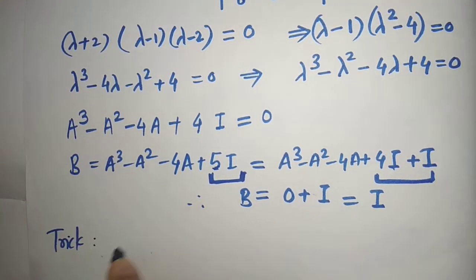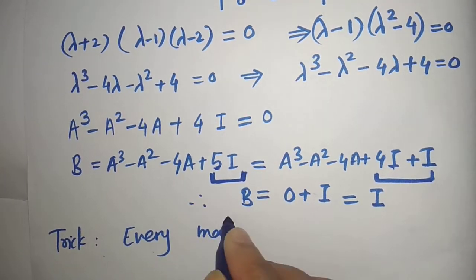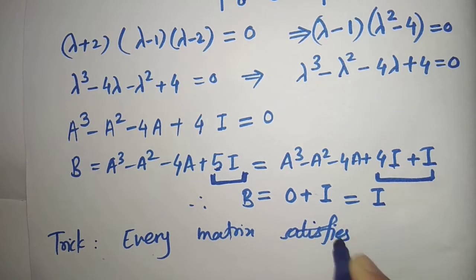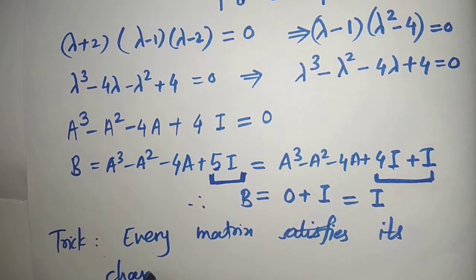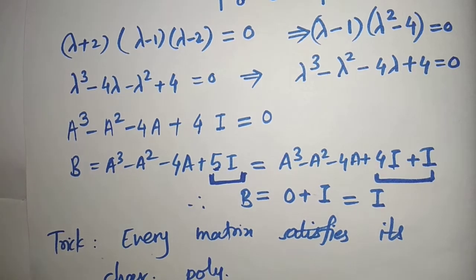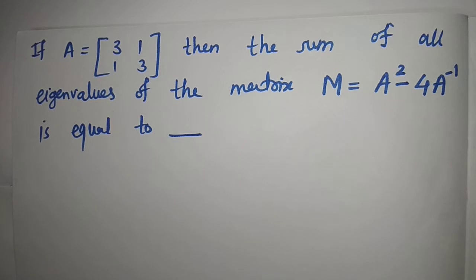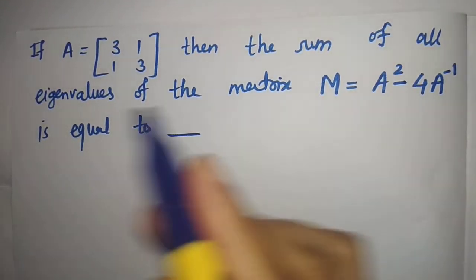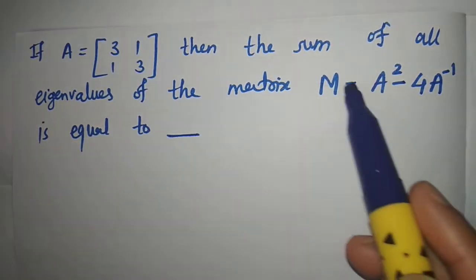The key trick is that every matrix satisfies its characteristic polynomial. Now let us solve another question. Let A = [[3,1],[1,3]] and we are asked about the sum of all eigenvalues of the matrix M = A² - 4A⁻¹.